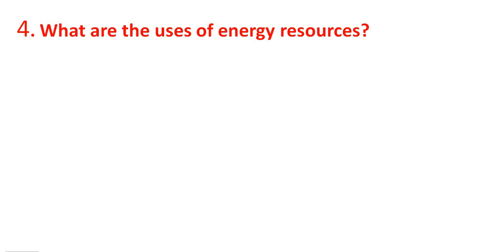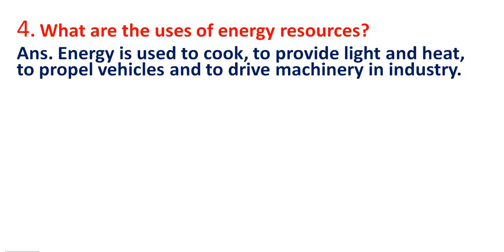What are the uses of energy resources? Energy resources ke use kya kya hai? Energy is used to cook, to provide light and heat, to propel vehicles, and to drive machinery in industry. Energy ka istamal hum khadanad banane ke liye, heat ke liye, light ke liye, vahano ko chalane ke liye, aur machineries ko chalane ke liye industries me karte hai. In savi kaamoh mein hum energy ka istamal karte hai.